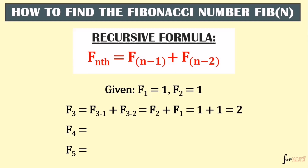For the 4th number, F4: we have F(4-1) + F(4-2), meaning we have to find the 3rd number and the 2nd number. The 3rd number is 2, which we just computed, and F2 is given as 1. So when we add them, the answer is 3.